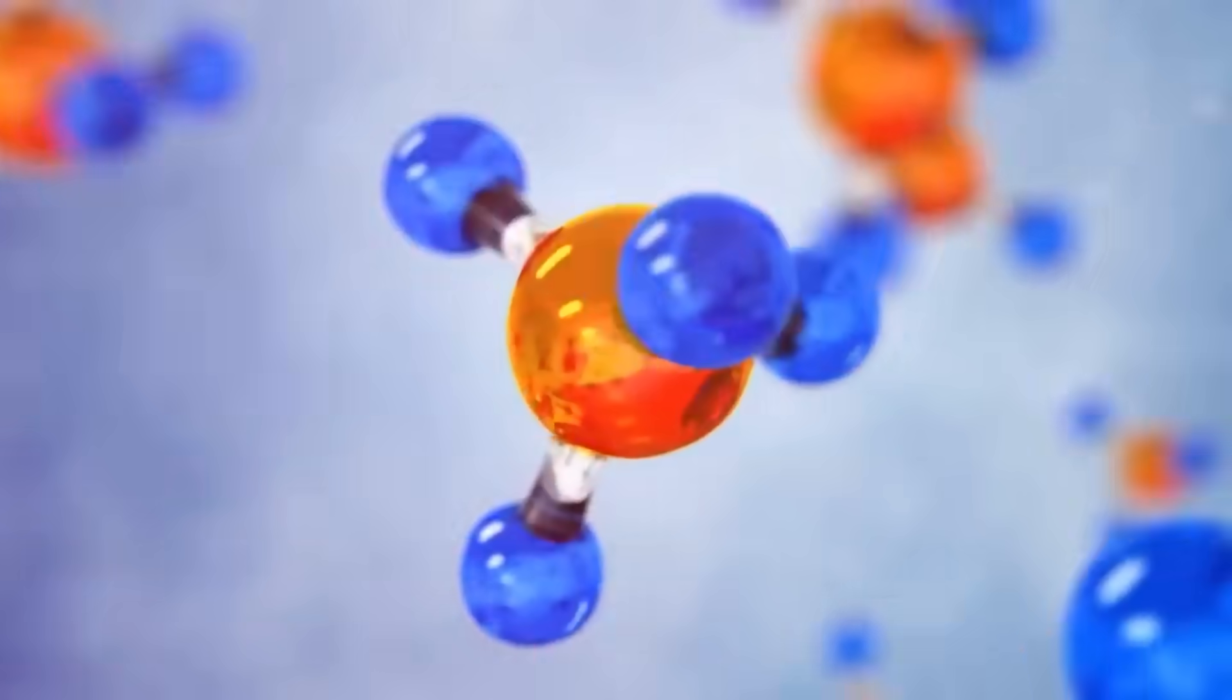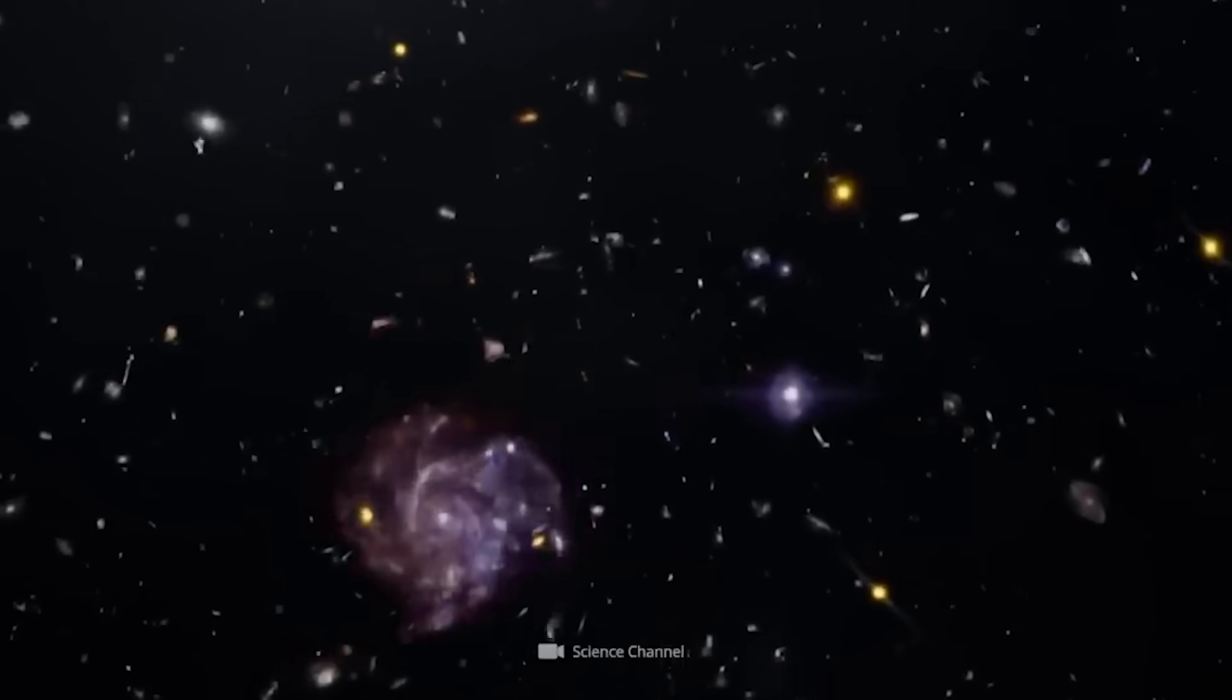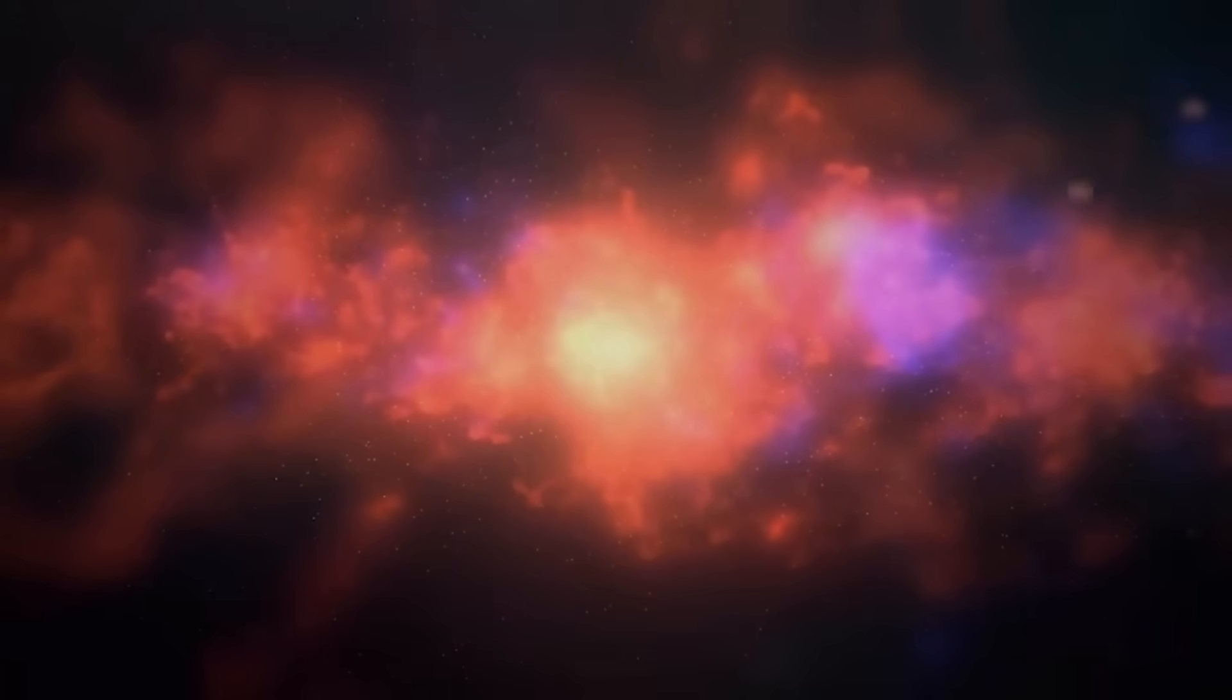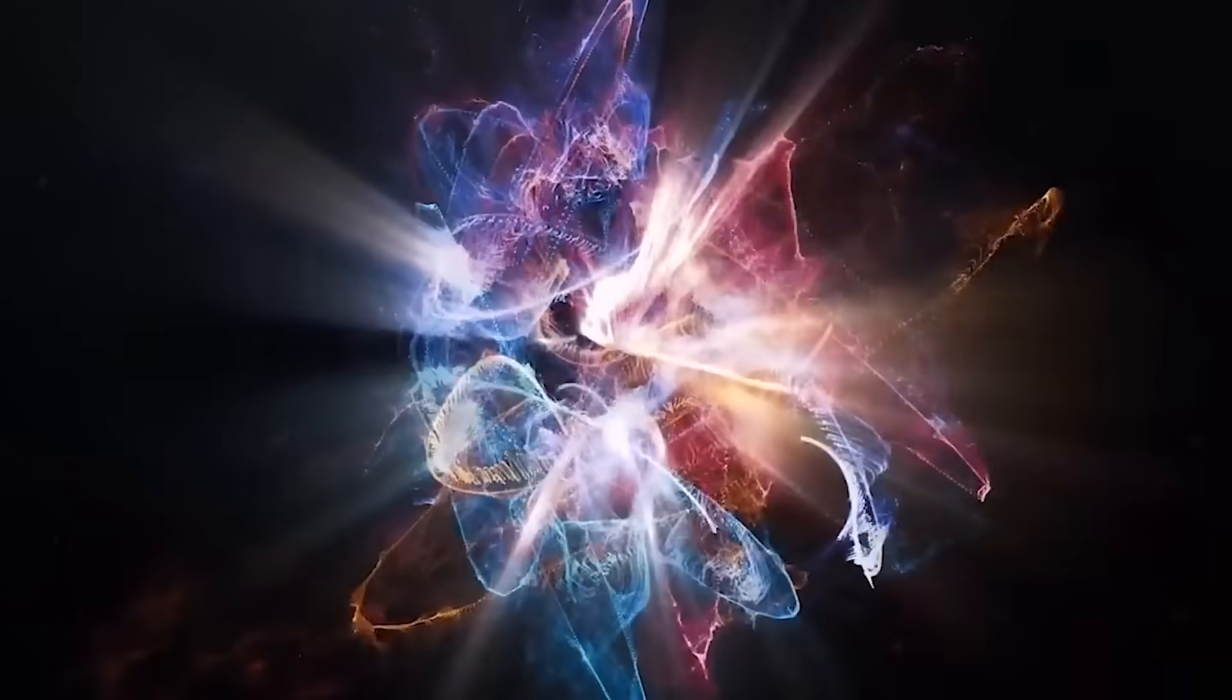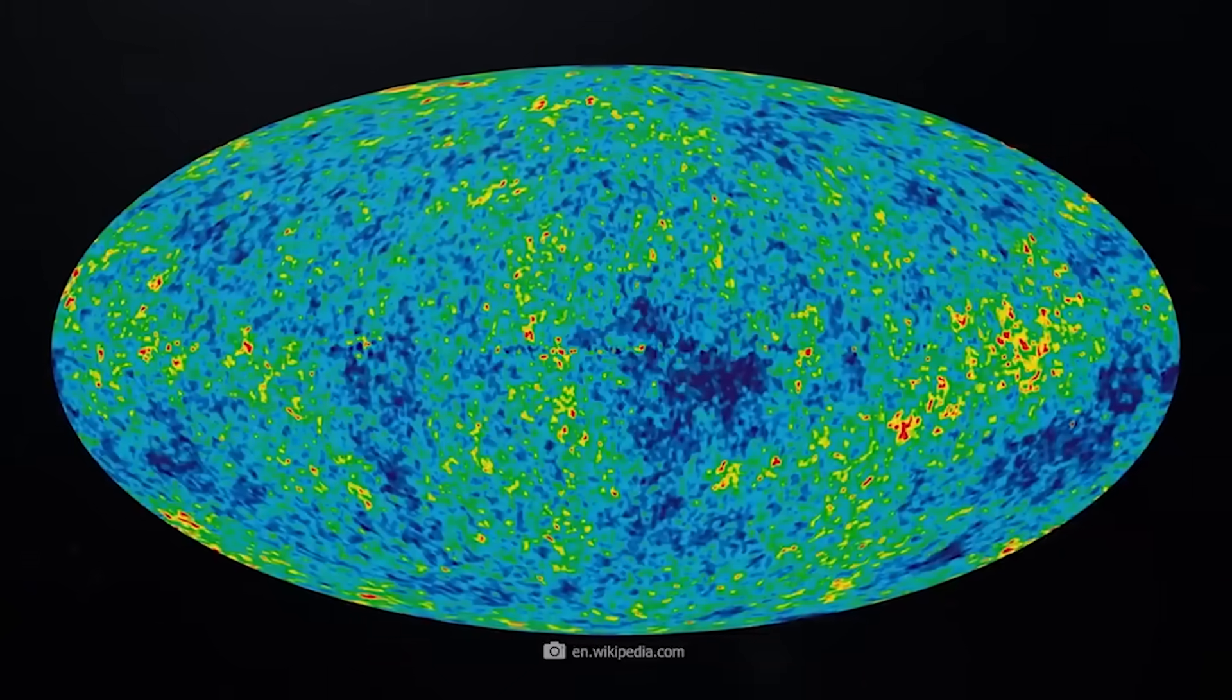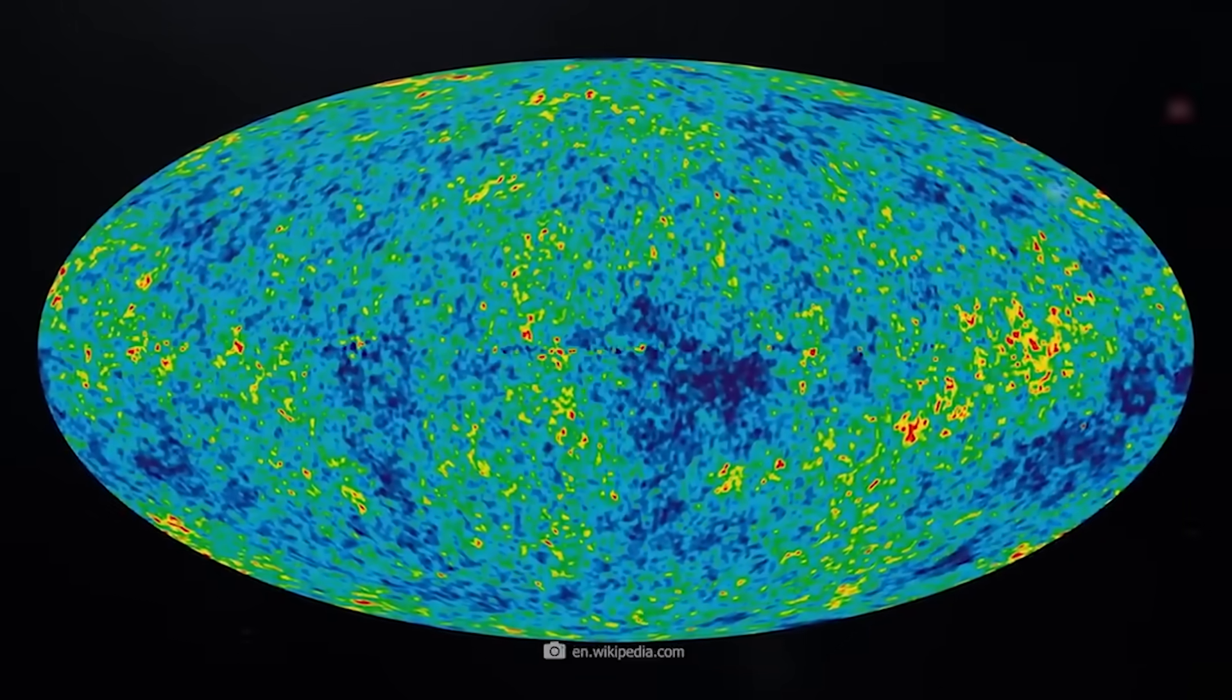It took around 380,000 years after the Big Bang for the universe to cool down enough to allow the formation of the first neutral atoms, primarily hydrogen and helium. As the cooling progressed, photons gained the ability to move freely, giving rise to the cosmic microwave background.